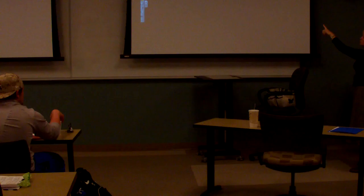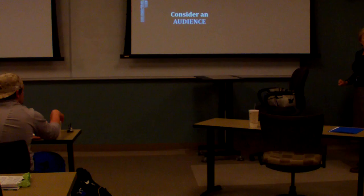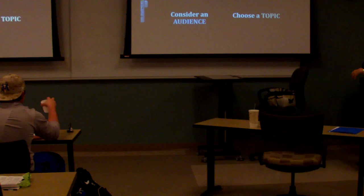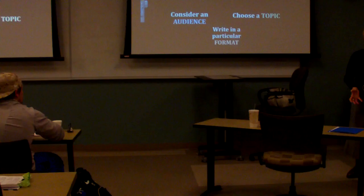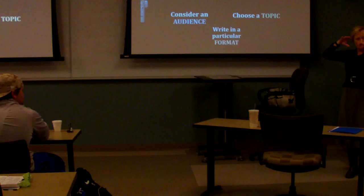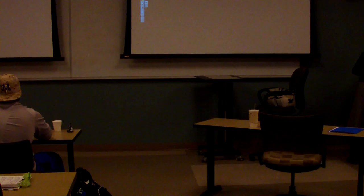RAFT — Carol Tomlinson is a differentiated instruction guru and this is one of her strategies for writing. The R is for Role: you assume a role, like a newspaper reporter from the Civil War. A is Audience: readers in the Confederacy, for example. F is Format: a newspaper article. T is Topic: the Battle of Franklin. You can use this to differentiate and let students choose. This can work for history or any number of subjects.